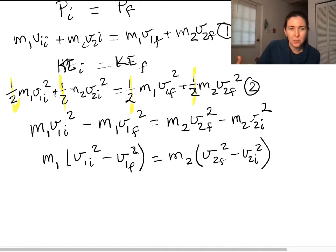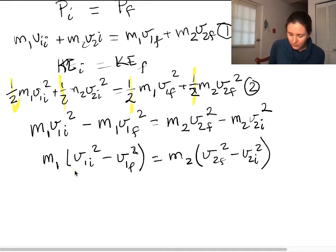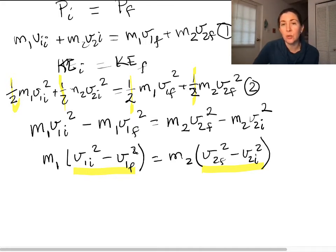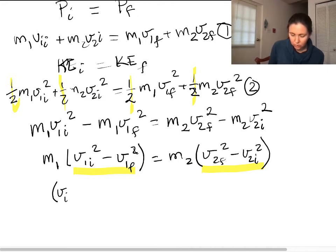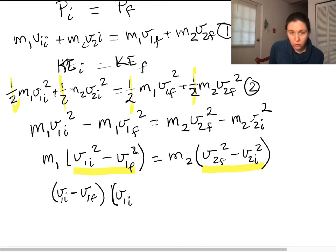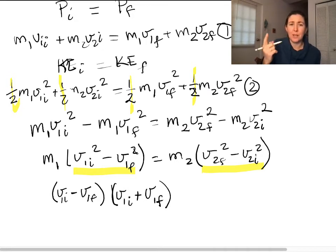Things are getting really algebra-heavy. You'll never have to do this, but I think it's important to see where it comes from. If you remember back to factoring, these squared terms can be expressed as a product of two quantities: V1_initial² − V1_final² = (V1_initial − V1_final)(V1_initial + V1_final). If you FOIL that out, you'll end up with the original expression. We can do that to the other side as well.